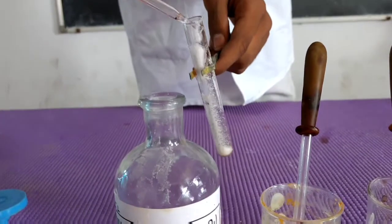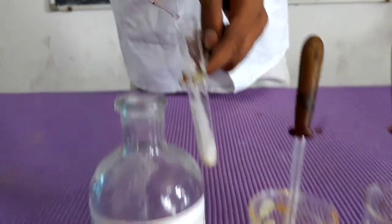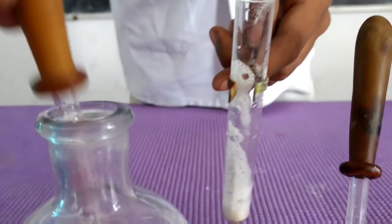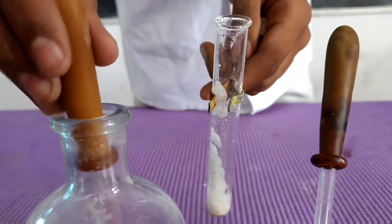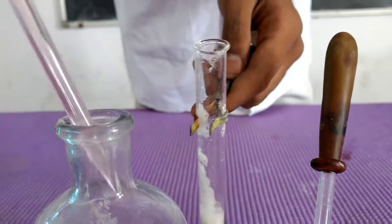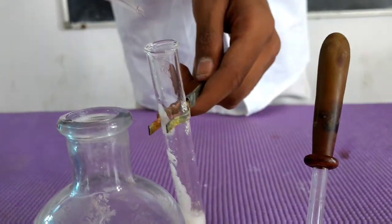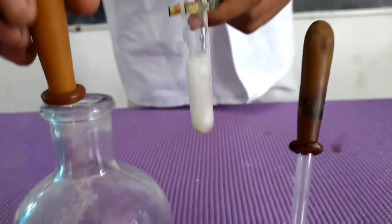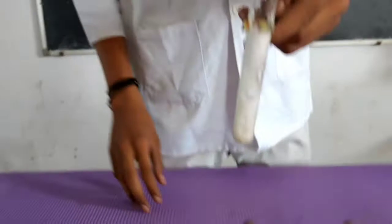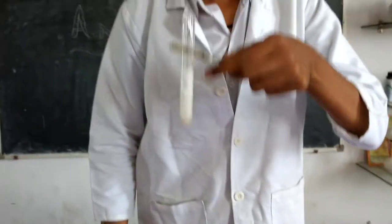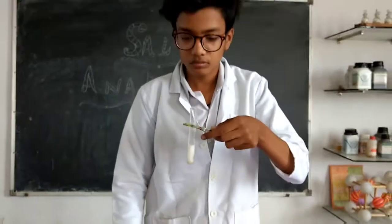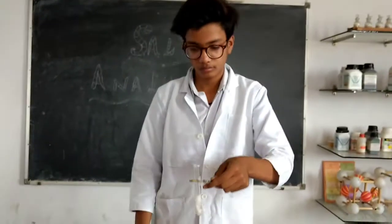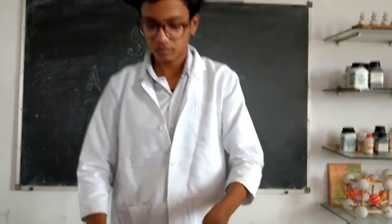He is adding dilute sulphuric acid in the test tube. You can see the evolution of NO₂ gas — light brown vapours — in the test tube.